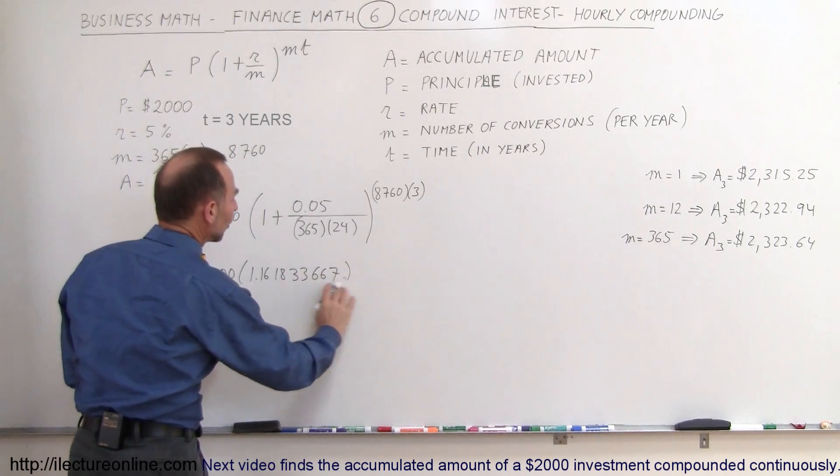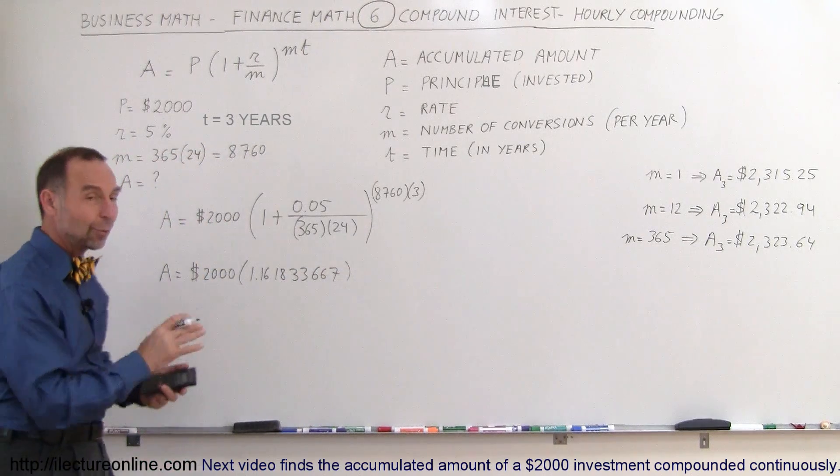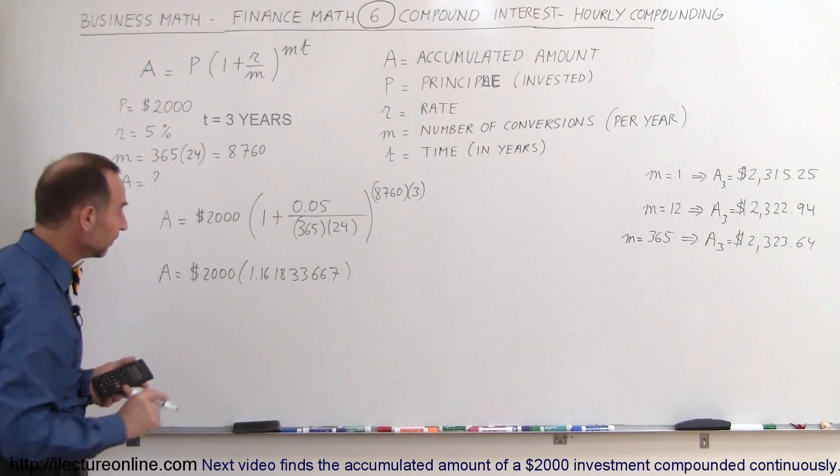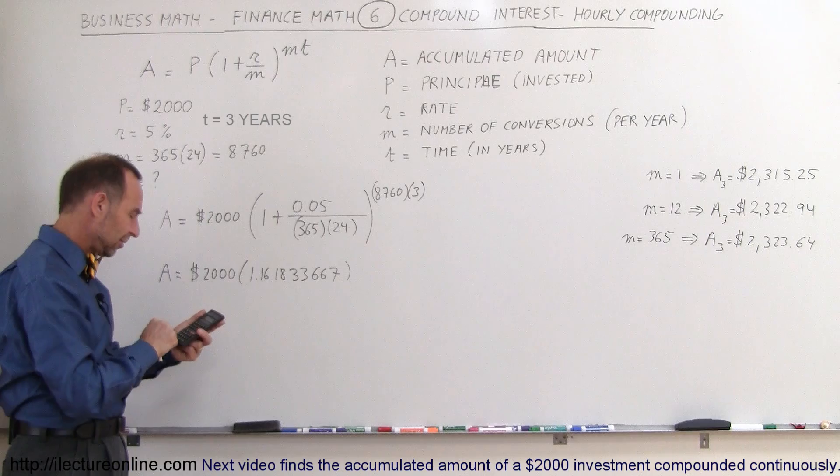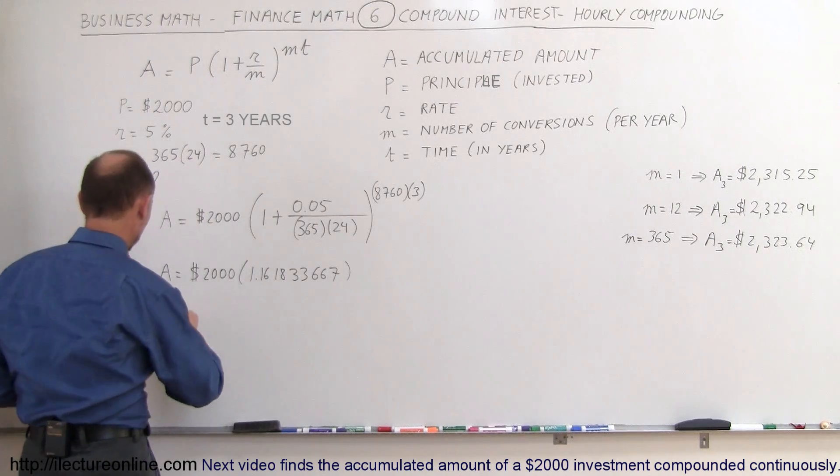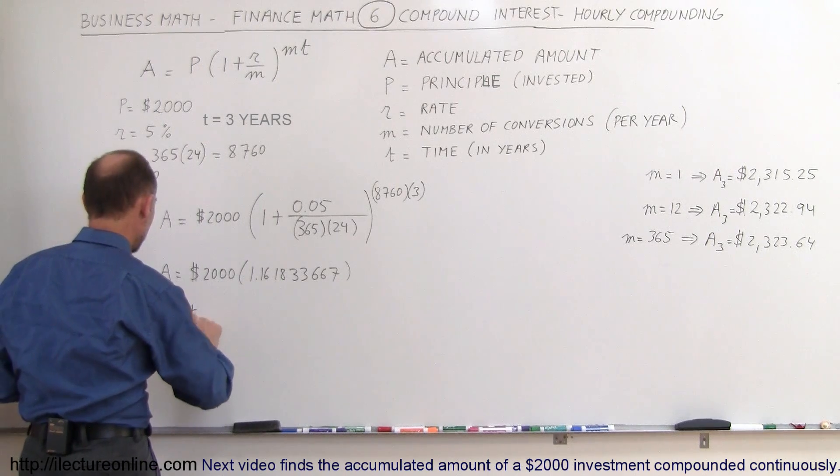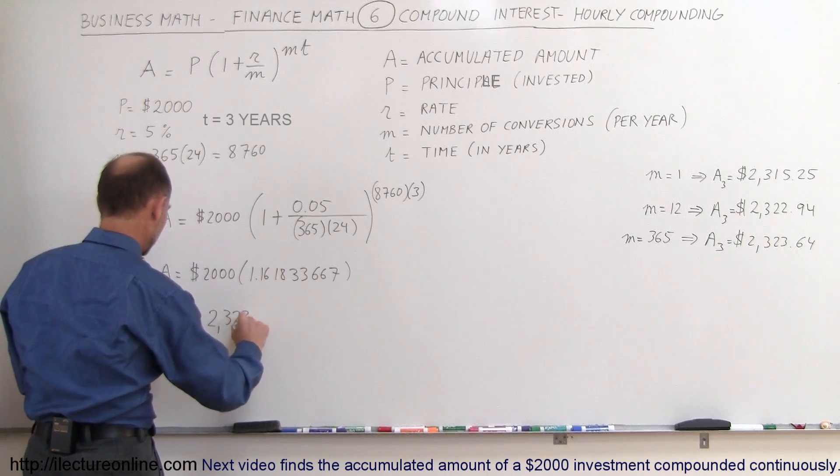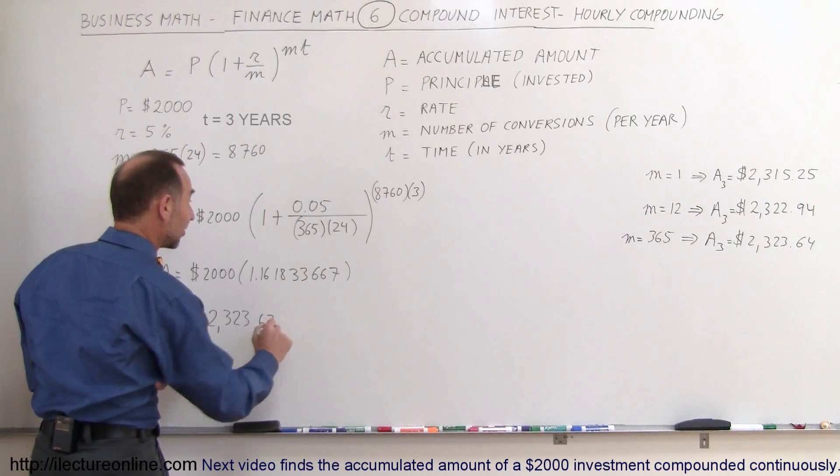You don't need all those significant figures, they're not really significant. When you do that yourself at home you can see if you get pretty well the same number. Then you multiply times 2,000 and you get the total accumulated amount to be $2,323.67.